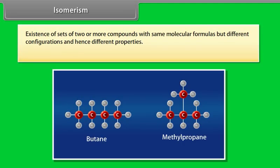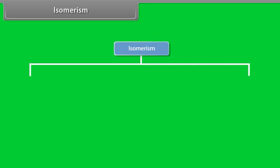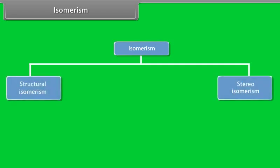Isomerism is the existence of sets of two or more compounds with the same molecular formulas but different configurations, and hence different properties. The compounds are called isomers. Different types of isomerism include structural isomerism and stereoisomerism.